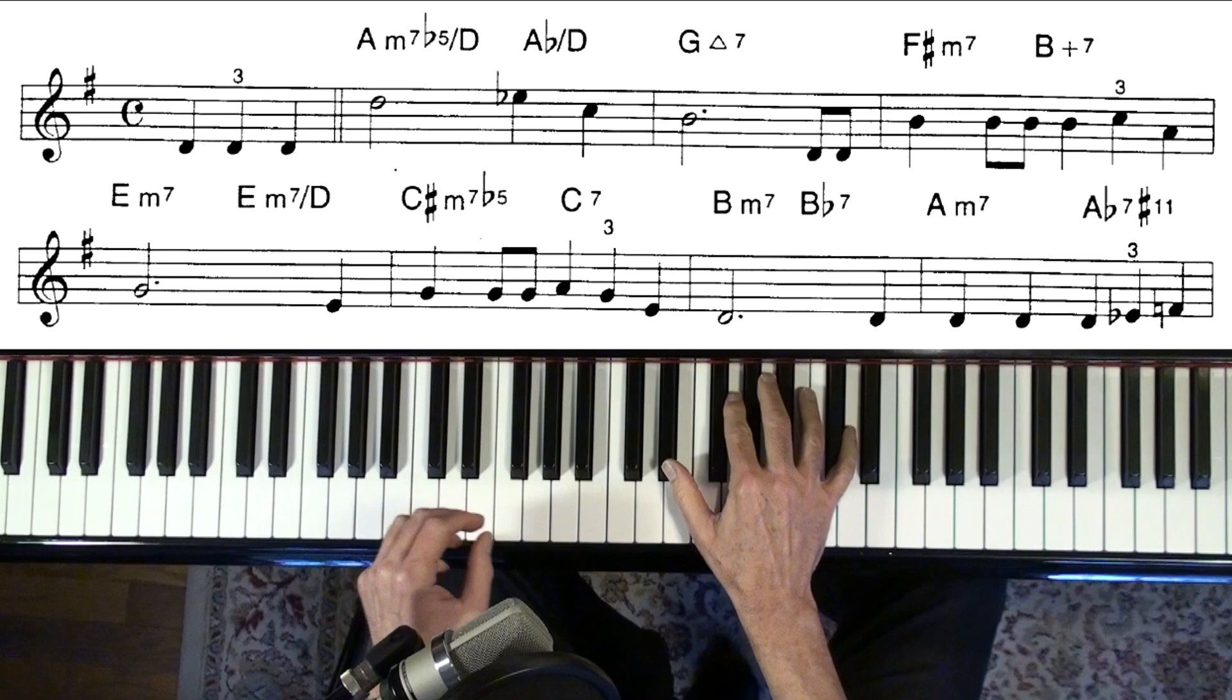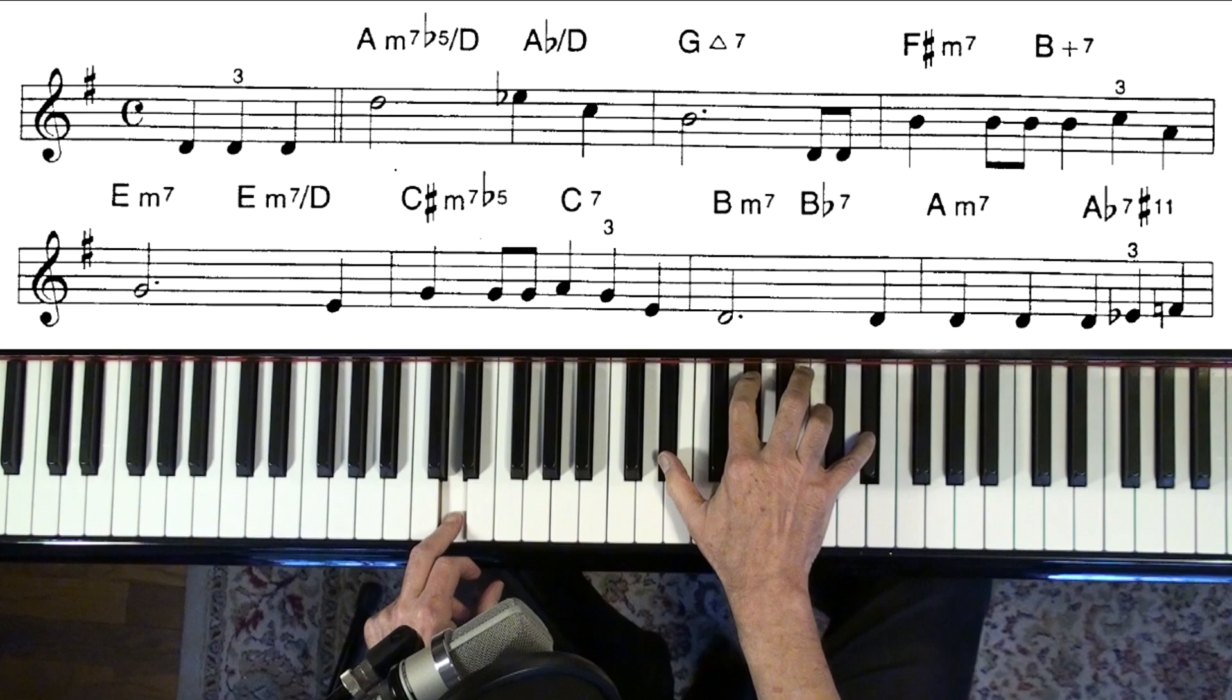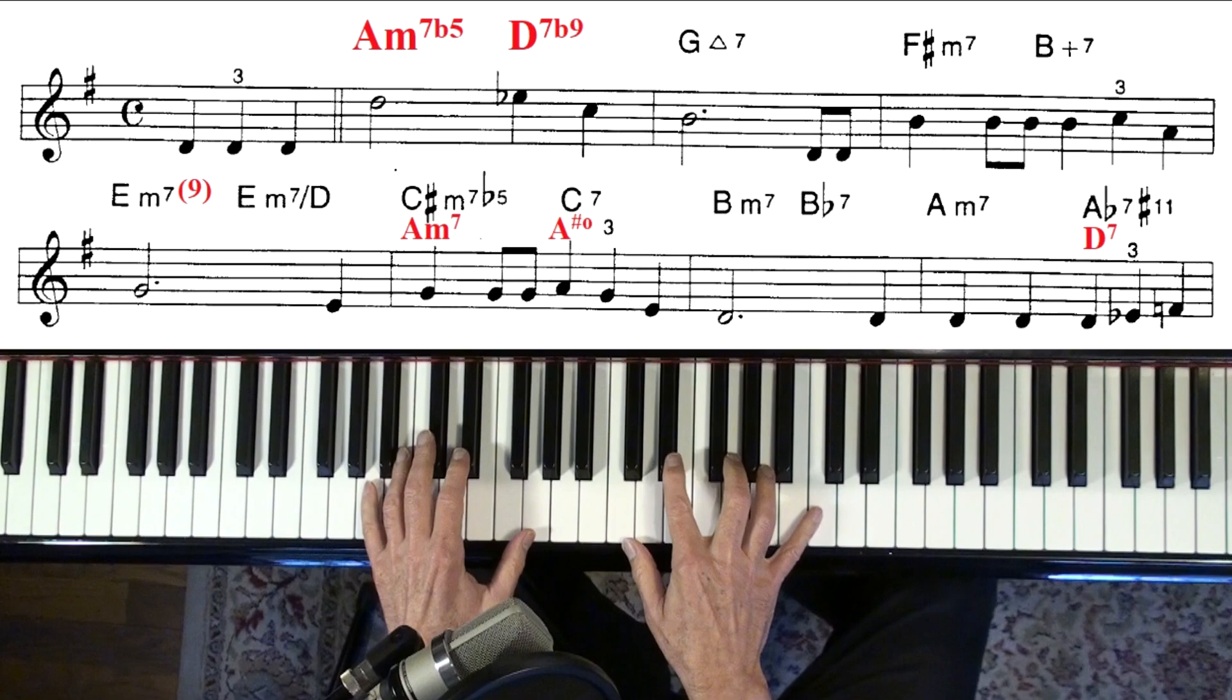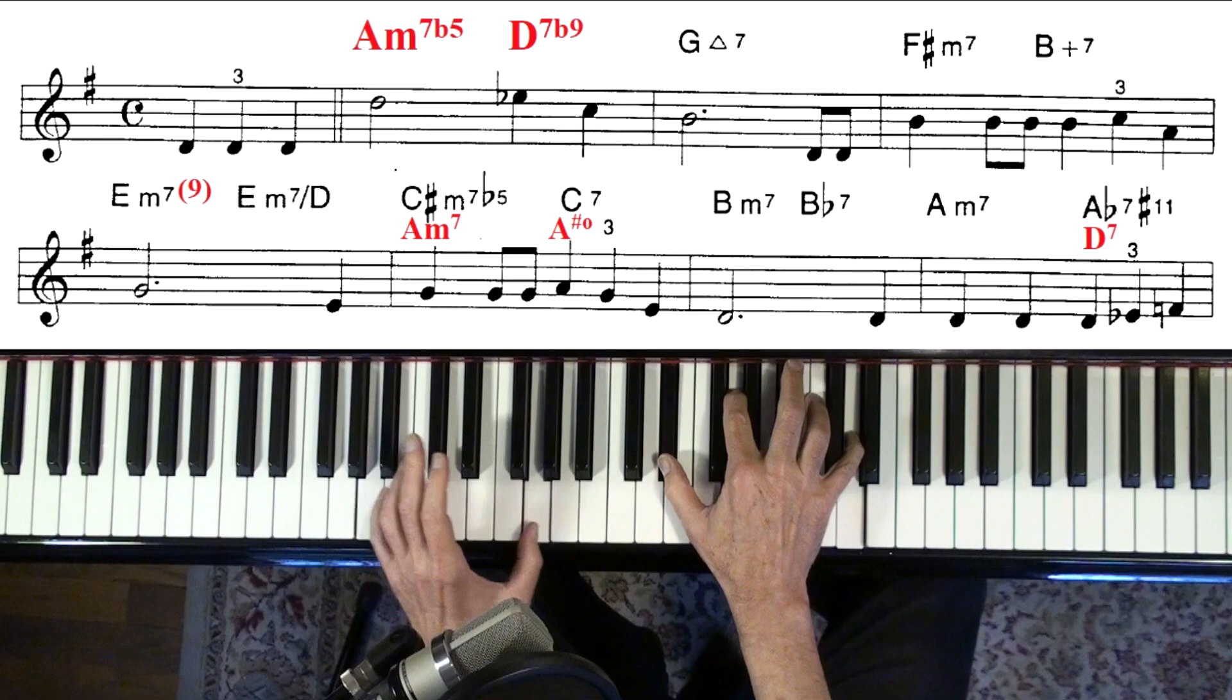We've got A minor seventh over D and then A flat over D. You can keep that one over D too if you wanted to, or really just play it without those pedal tones. You could do A minor seven flat five, and then D seven, something like that maybe.